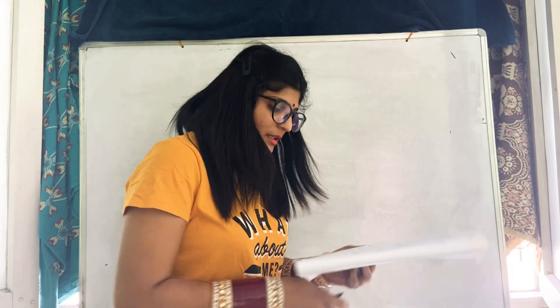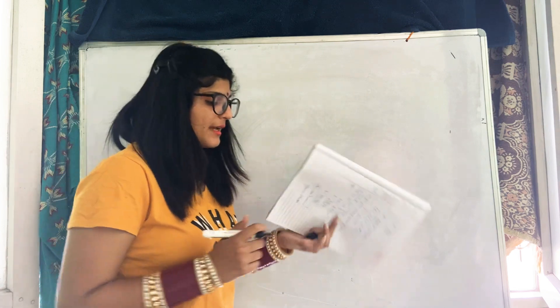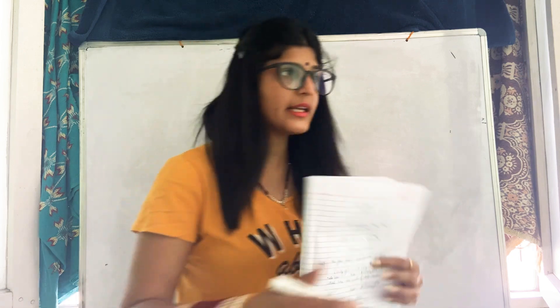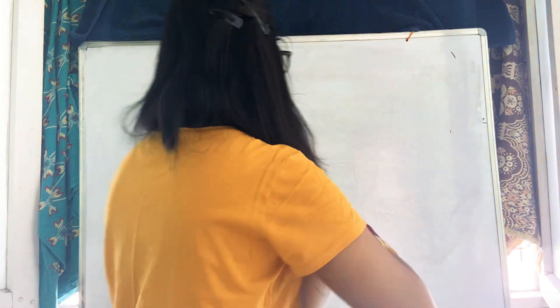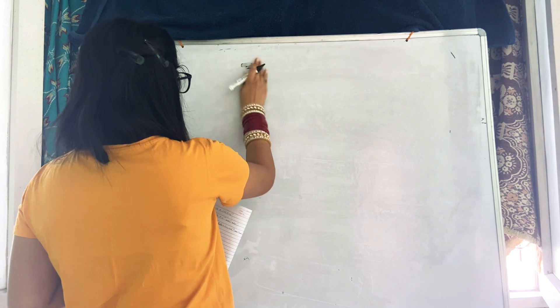The rate of formation of a second order dimerization reaction is 5.8 into 10 raised to minus 6. The rate of reaction is already given.